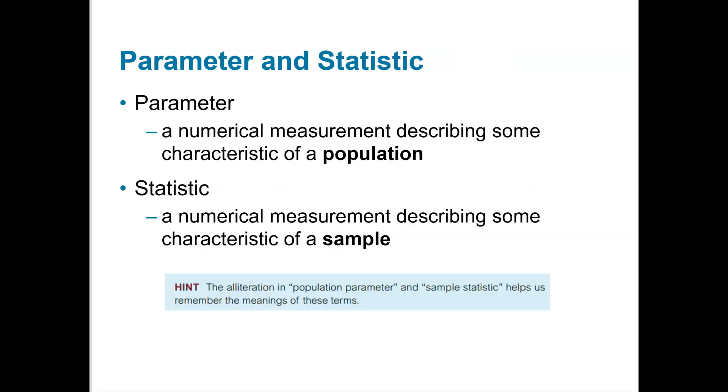Our first vocabulary is parameter versus statistic. A parameter is a numerical measurement describing the population and a statistic is measuring something about the sample. So a good alliteration here is population parameter and sample statistic to help you remember those two words.